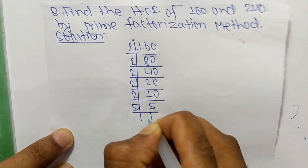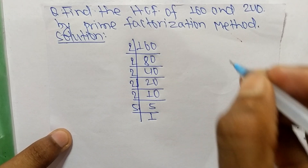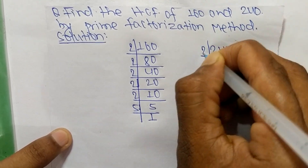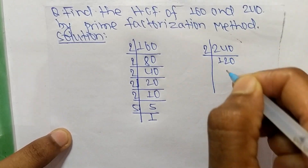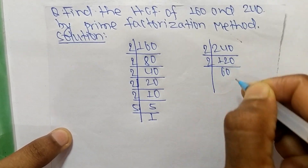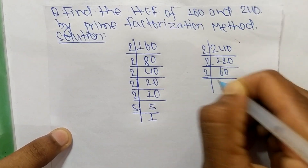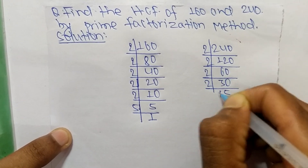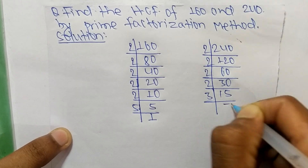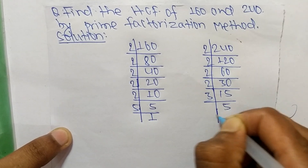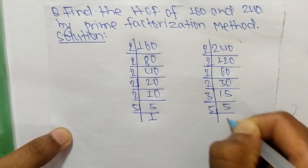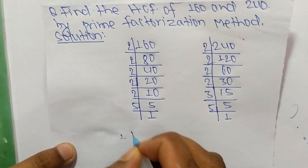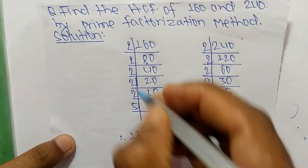Similarly, the prime factors of 240 are: 2 times 120, 2 times 60, 2 times 30, 2 times 15, 3 times 5, and 5 times 1.